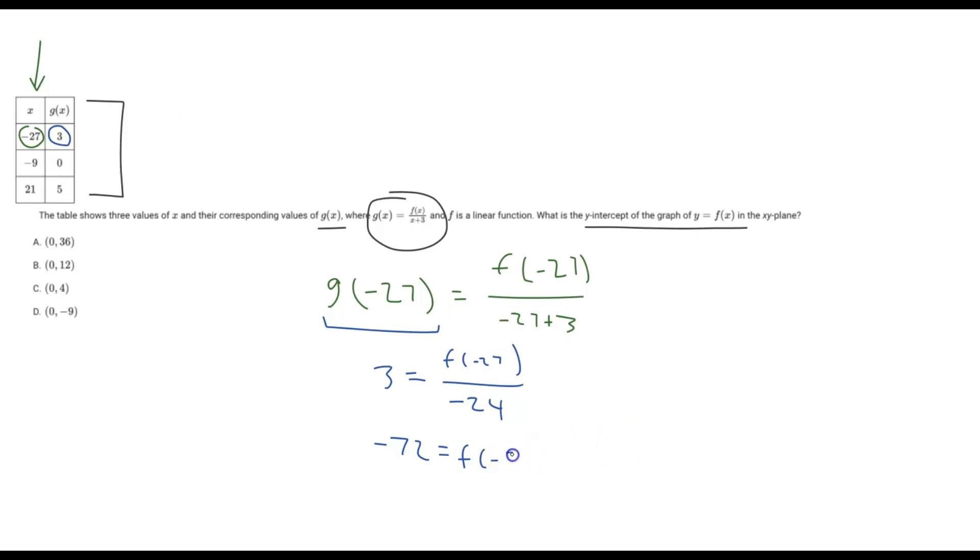So you might be wondering, why did I just go through this entire process? Well, here, we've just given ourselves one coordinate point. f of negative 27 equals negative 72.